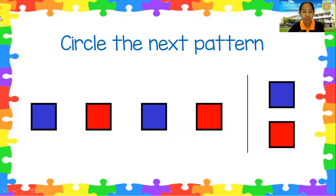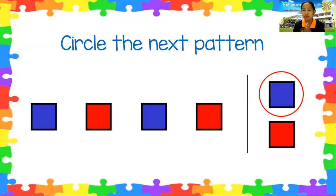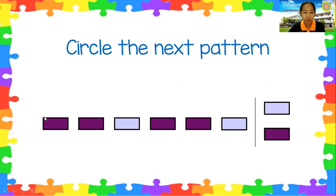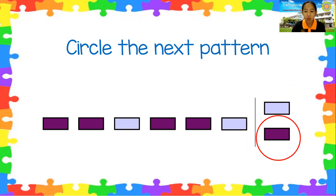How about this? Blue, red, blue, red. What is the next pattern — is it blue or red? It's blue. Very good. Next is purple, purple, gray, purple, purple, gray. What is the next pattern? It's purple. Very good, that is correct.